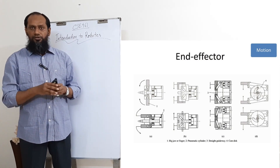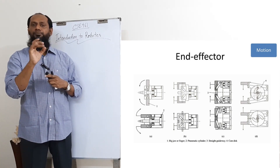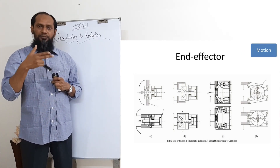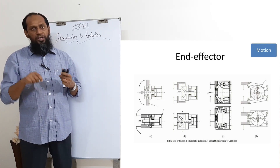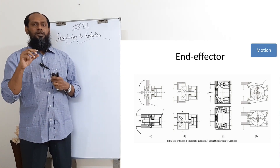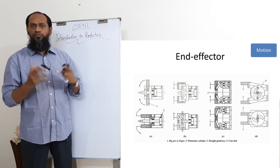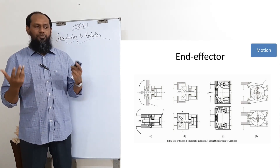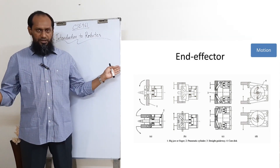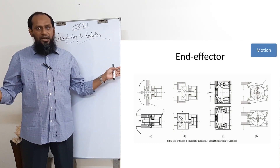End effectors are the last part of the manipulator — like our fingers. There are different types and different ways to grab or work. For sewing we need a different type of finger, for grabbing a glass another type, for pressing a key yet another. Here you can see three or four different types: the first one closes and opens in a specific way.